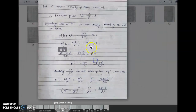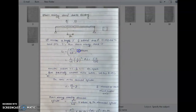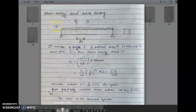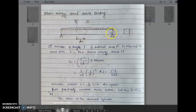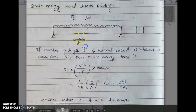If numericals come in the exam on this type of loading, use this formula. Now we will see the next point: strain energy stored due to bending. Consider a uniform distributed load acting on a fixed support beam — a total fixed support beam. We take two sections, section 1 and section 2.